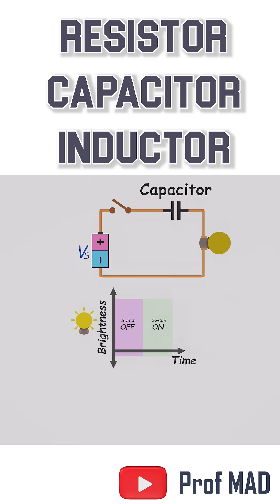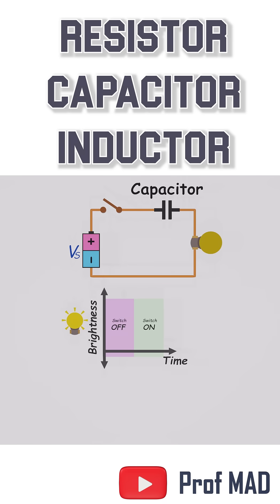Now the second circuit adds a capacitor in series. Again, switch off, dark. But turn it on, and the bulb flashes bright for a split second, then fades out completely. That capacitor just soaked up the charge and stopped the current.